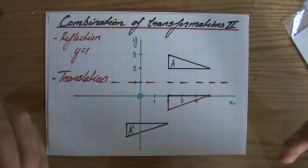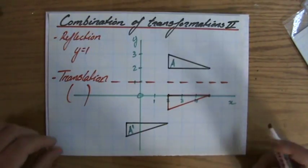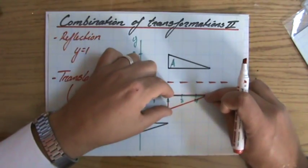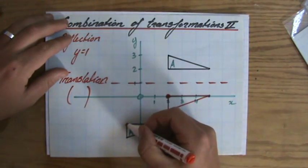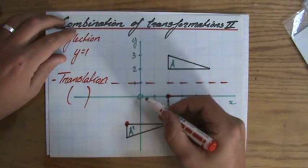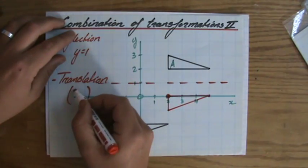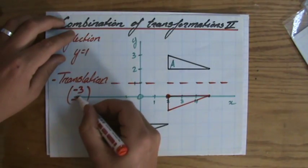But you're not going to say just a translation. You've got to give the column vector of the translation. So what maps this one on that one? Now let's do that point by point. So I will identify two corresponding points. So it goes 1, 2, 3 to the left, so minus 3, and then 2 down, minus 2.